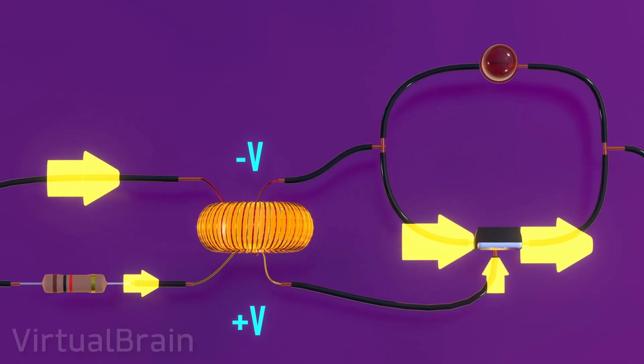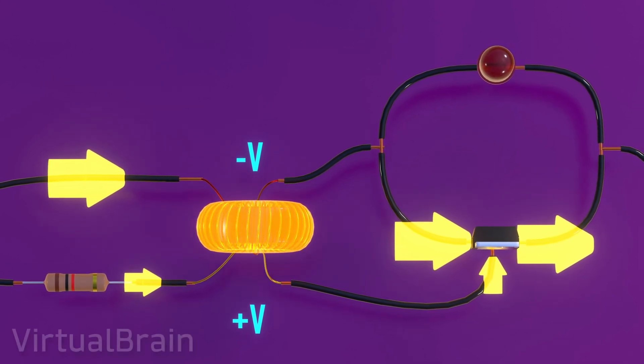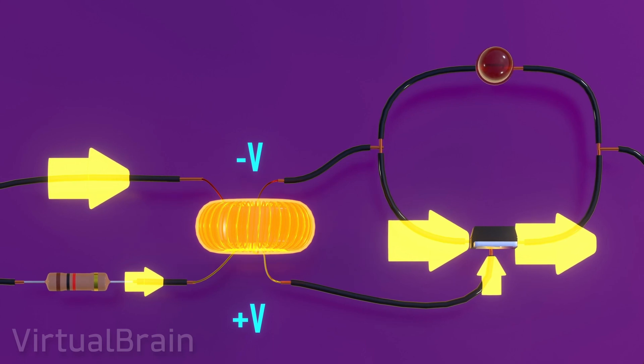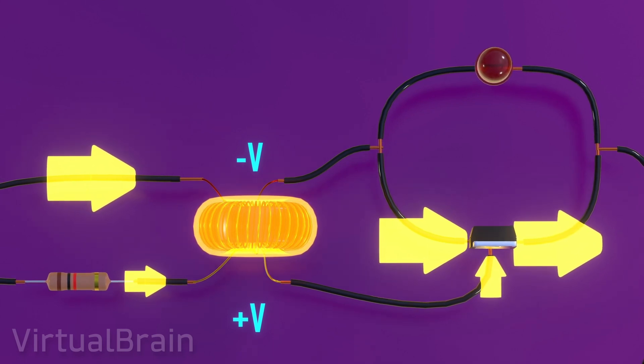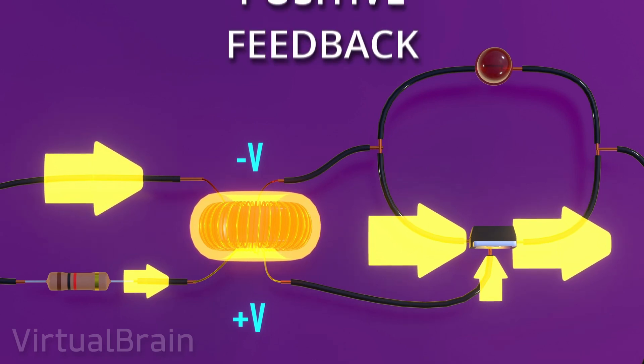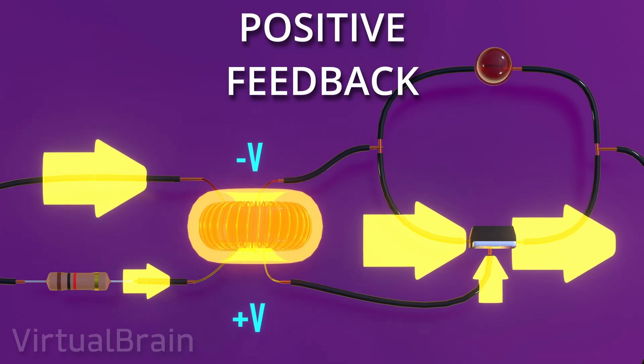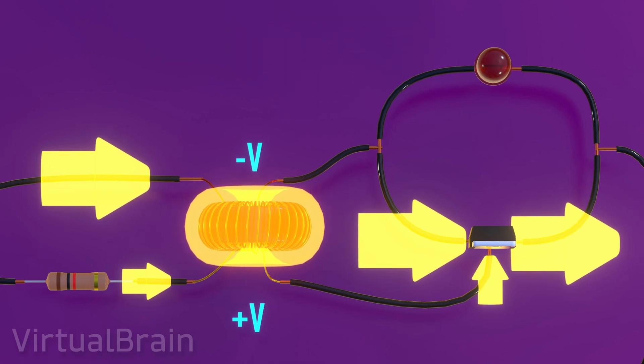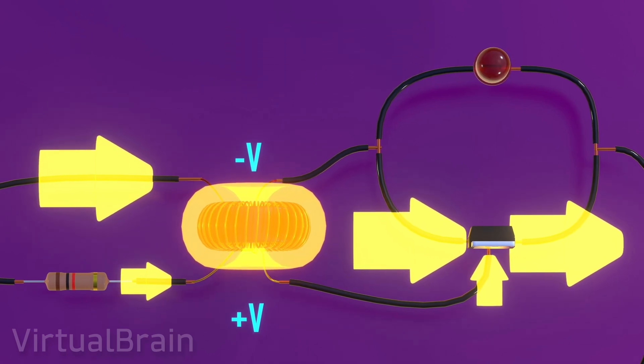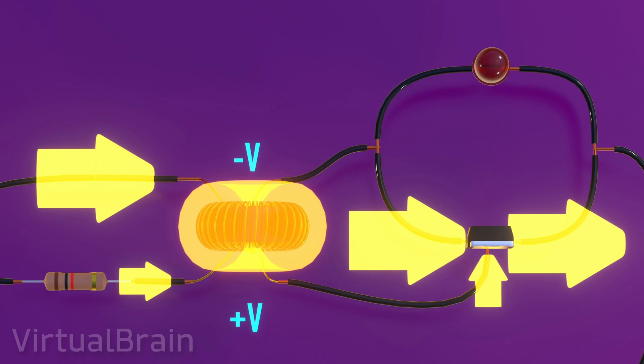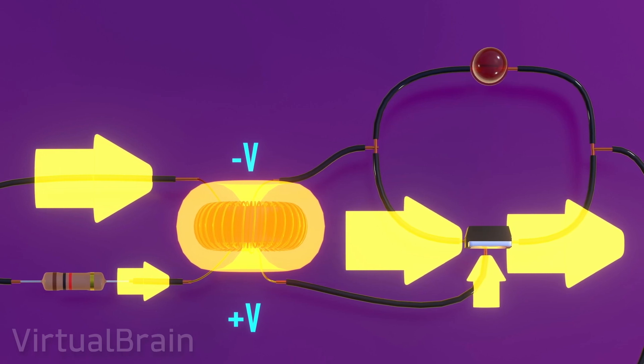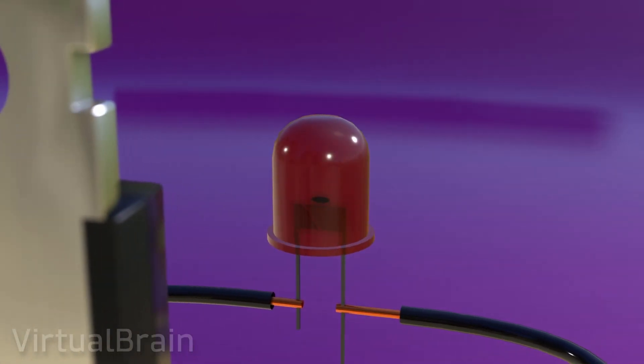This, in turn, will cause the inductor magnetic field to grow as well, inducing a higher voltage on path A and causing more current to reach the base, repeating this cycle continuously. In other words, we have a positive feedback process that will cause the transistor to be turned on practically all at once, allowing current to flow through path B as if it were a closed switch. So far so good, but what about the LED? Unfortunately we still don't have enough voltage to turn it on yet.